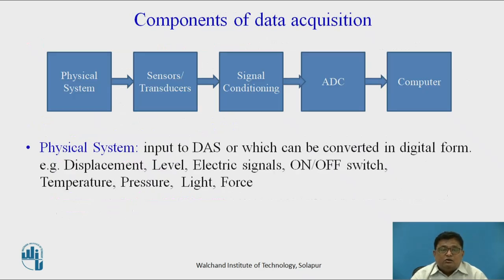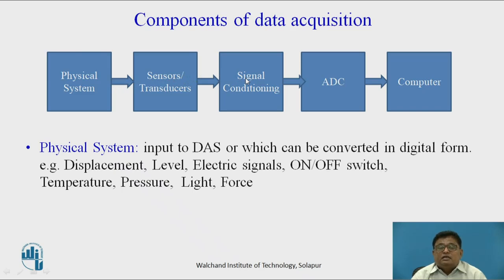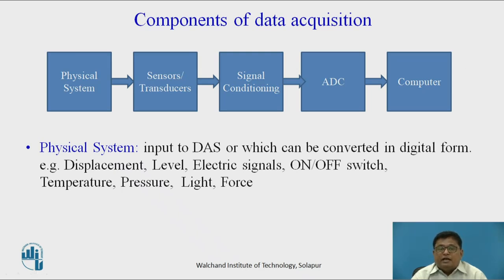The general look of the controller-based data acquisition system is as follows: the first part is the physical system, then the sensor or transducer, then the signal conditioning circuit, then the ADC to convert into digital form, then the controller or computer for processing, and finally some output devices to complete the entire system.